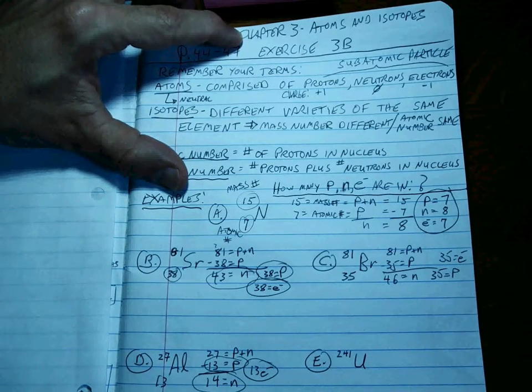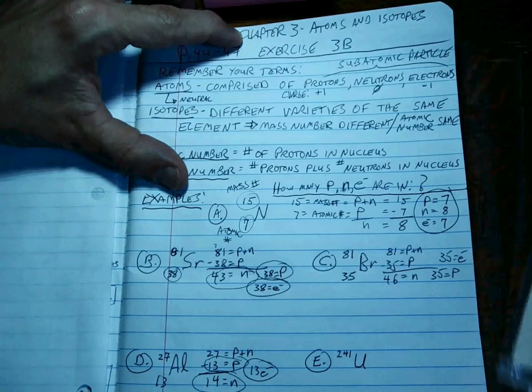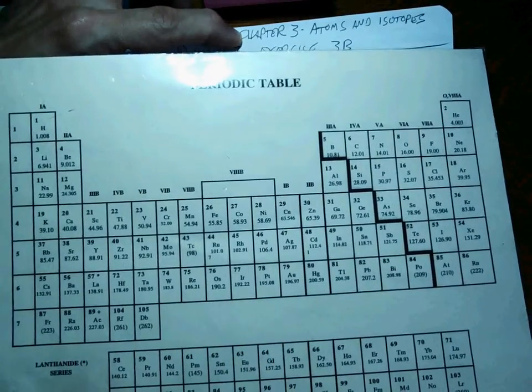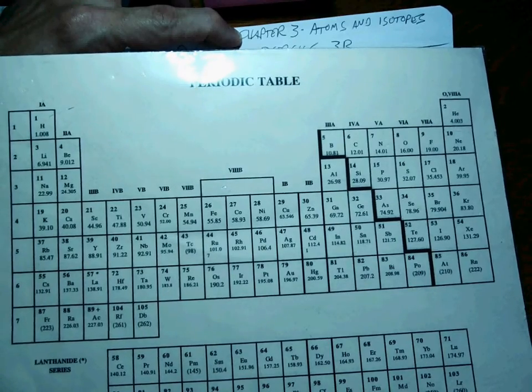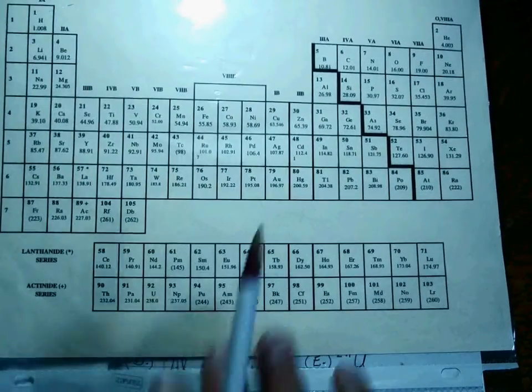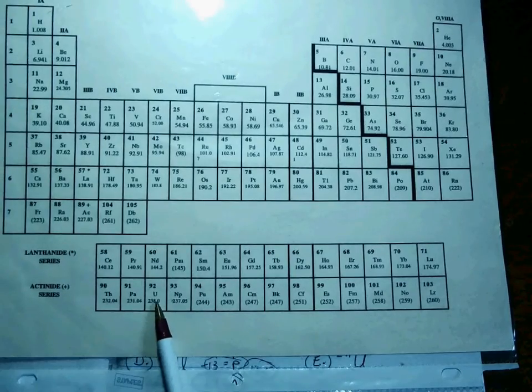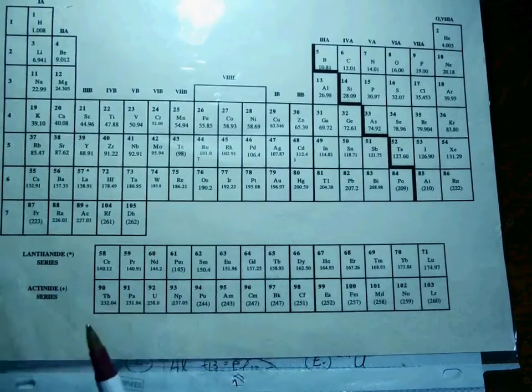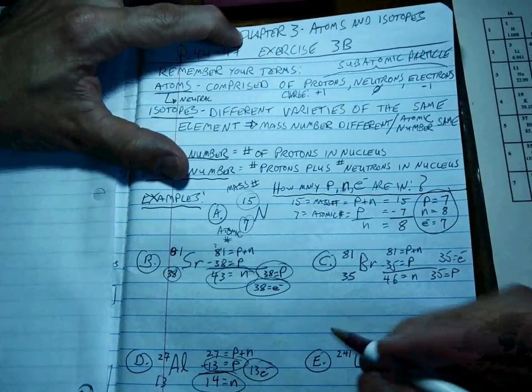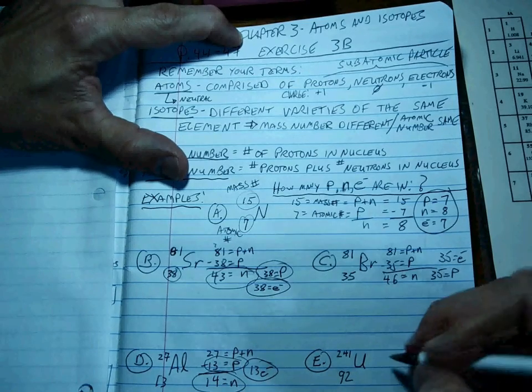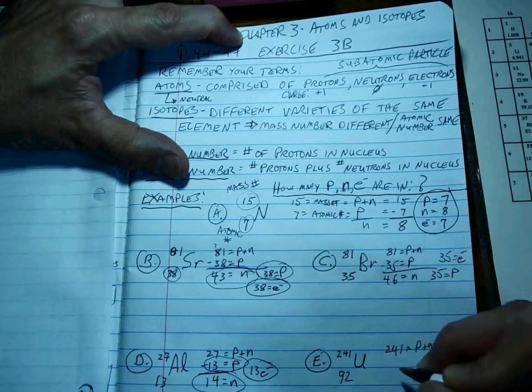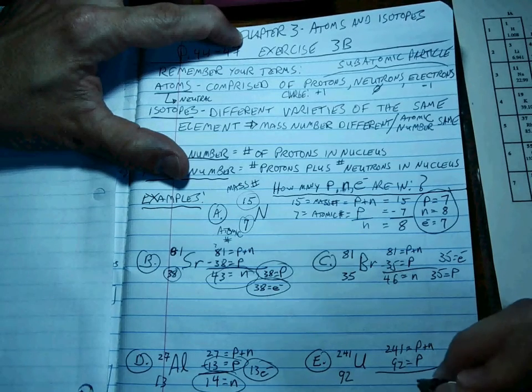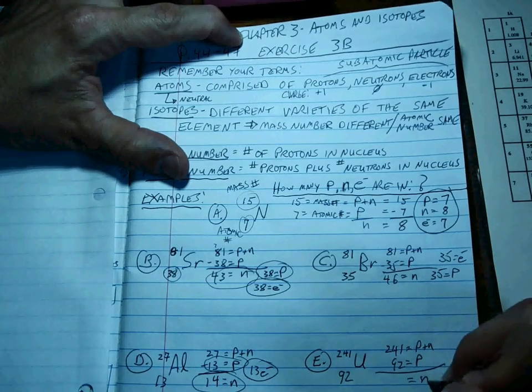Finally, let's finish this out with uranium. We look up element U, and that's all the way down here. And there it is. Uranium. Element number 92. That's the atomic number. So, 241 is equal to the protons plus neutrons. 92 is the protons. The difference is the neutrons.